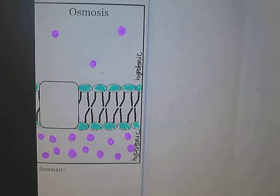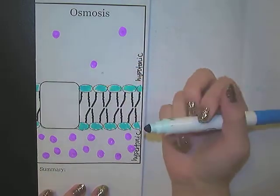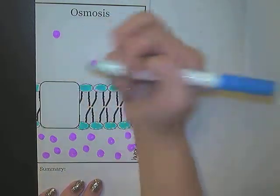In osmosis we're still talking about moving things across the plasma membrane, but in this case we're talking about water molecules moving. So these solute particles are not going to be crossing the membrane, so the next best thing is to move the water.